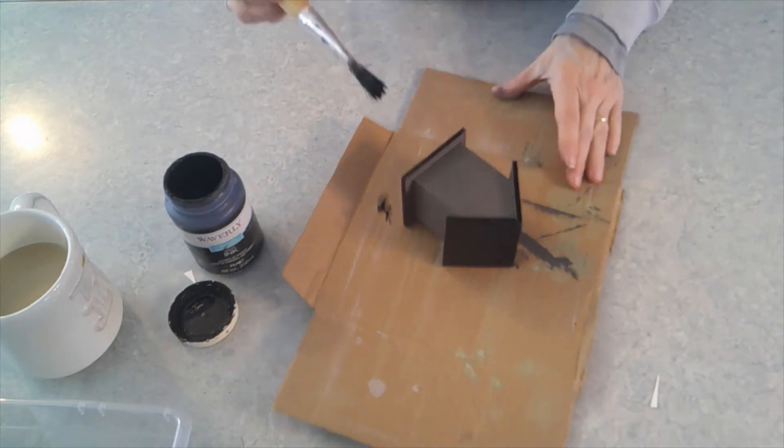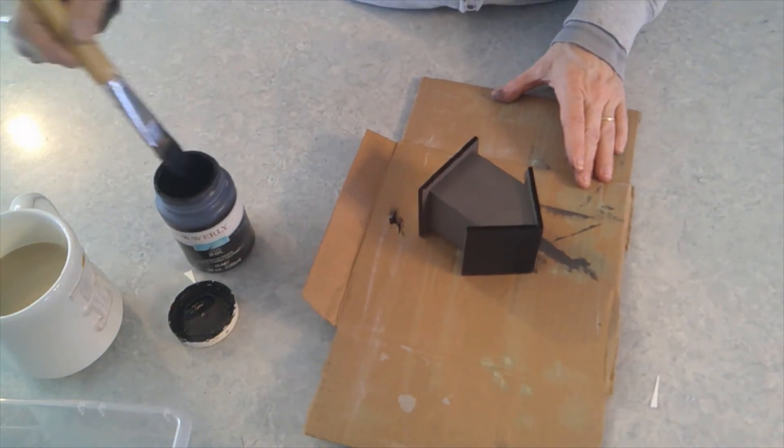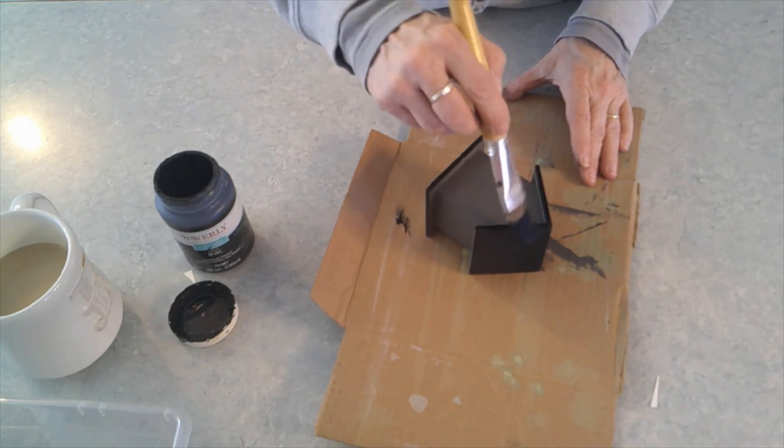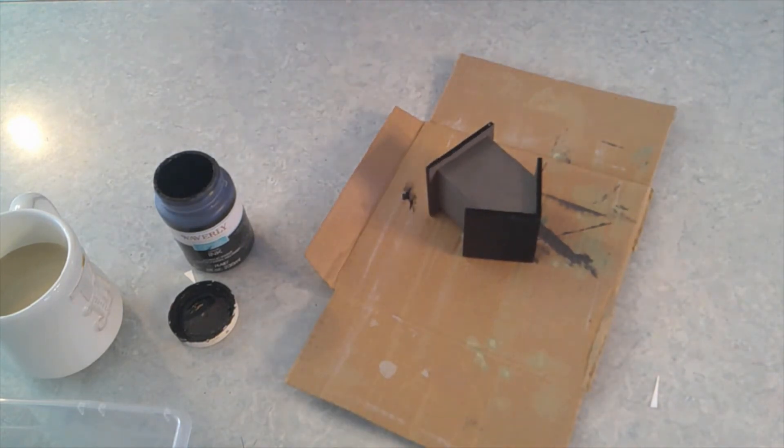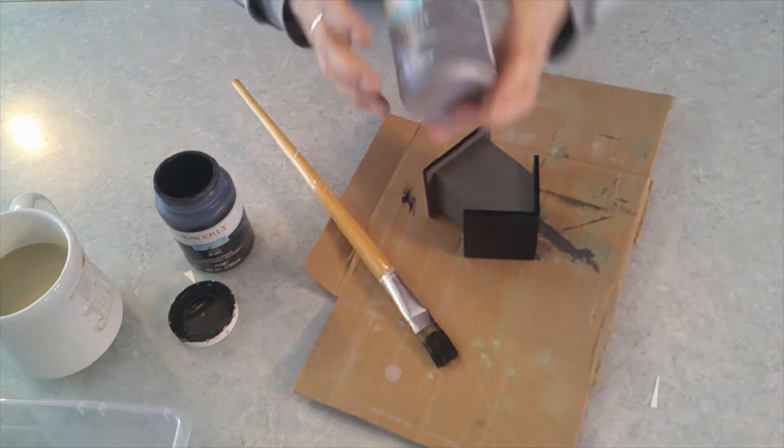I had a Dollar Tree birdhouse in my stash and I painted the back and two sides with elephant color chalk paint from Waverly and then I used Waverly's ink color on the roof and the base.